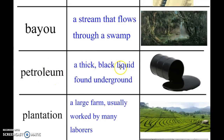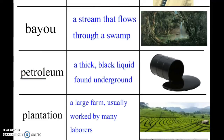Petroleum is a thick black liquid found underground. You might know this word — you might know the word petroleum jelly, which is what Vaseline is. You might know that in England they call gas petrol, and petrol is also where we get our gasoline; our gas for our cars comes originally from oil. So you can think of how those words are connected.